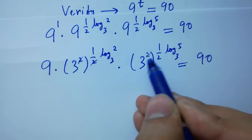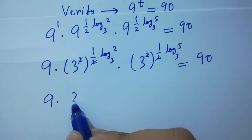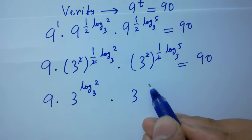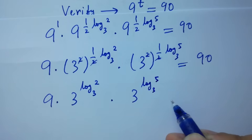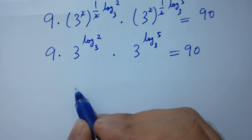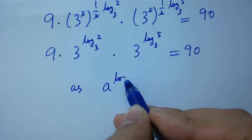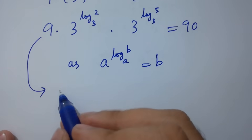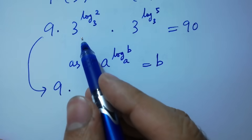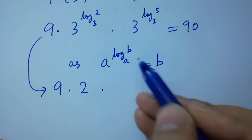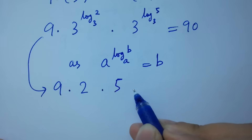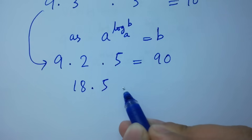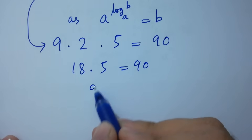The 2s cancel, giving 9 times 3 to the power log 2 to the base 3 times 3 to the power log 5 to the base 3 equals 90. Using the identity a to the power log b to the base a equals b, we get 9 times 2 times 5 equals 90. That gives us 9 times 2 is 18, and 18 times 5 is 90, which equals 90.